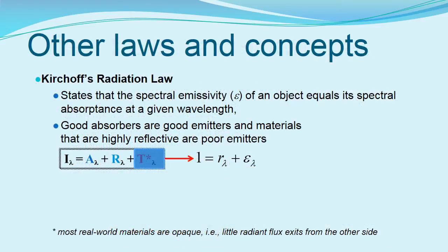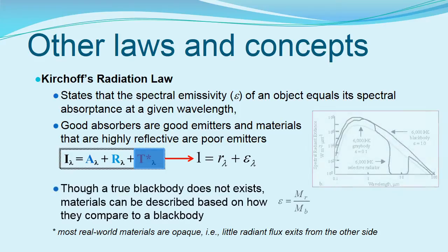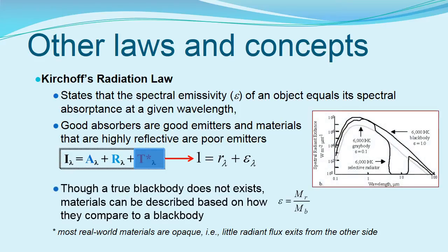Finally, we know through Kirchhoff's law that materials that are good absorbers are good emitters, and materials that are highly reflective are poor emitters. Through the application of additional radiation principles, we can determine the emissivity of real materials — sometimes referred to as gray bodies — and modify the Stefan-Boltzmann law to estimate the temperature of an object using a thermal infrared sensor.